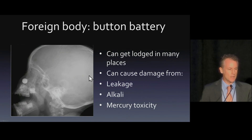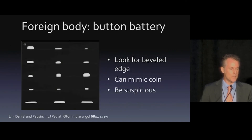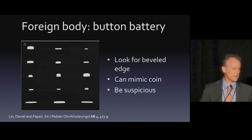Here's another foreign body we look for — button batteries. This is the second most common location for a button battery to get stuck. Damage can be caused by leakage from the battery, an alkali environment burning the soft tissue, and toxicity. A caution: we might be asked whether something is a coin or a button battery. A publication from Dr. Lin in otolaryngology shows a variety of button batteries, and you can see how similar many look to coins — it can be hard to tell the difference on a radiograph. When giving a definitive opinion, I would be suspicious.